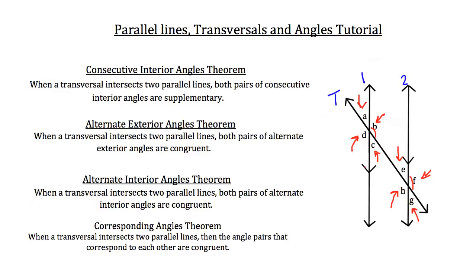You're going to see a lot of problems where they give you just one or two angles in a diagram where a transversal cuts two parallel lines. With the one or two angles provided, you'll probably be able to fill in the rest of the diagram — the other six or seven missing angles — because of these three theorems. They're very important when dealing with parallel lines and transversals.